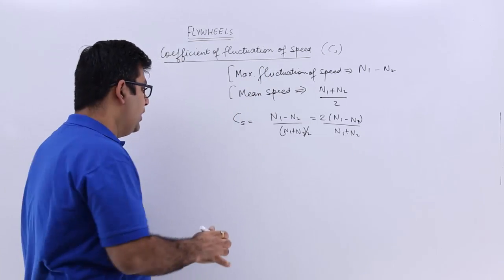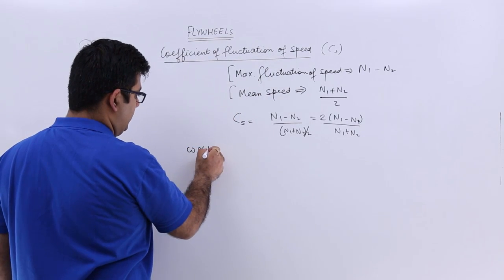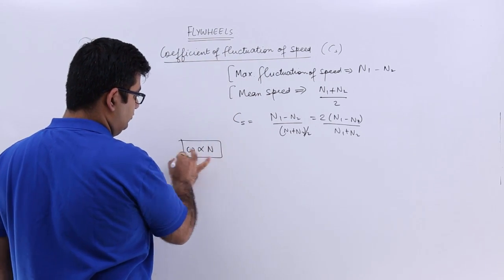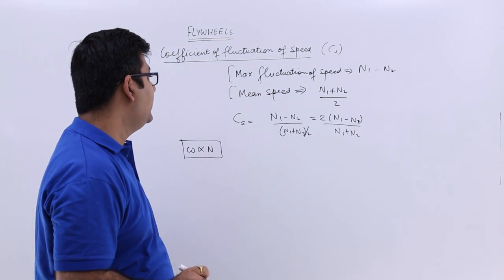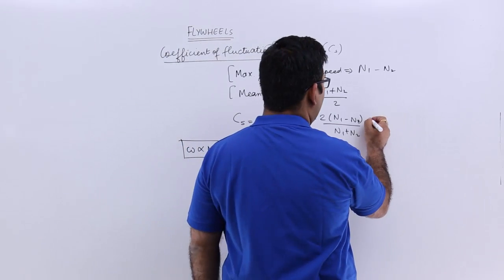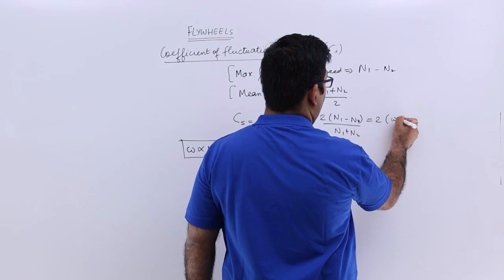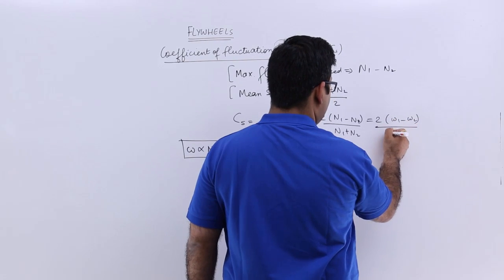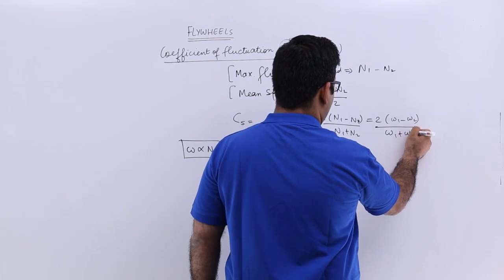Now we know that omega is proportional to n, isn't it? So I can say that n can be replaced by omegas. So you will have 2 into omega 1 minus omega 2 by omega 1 plus omega 2.